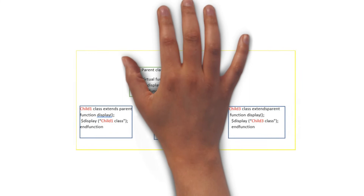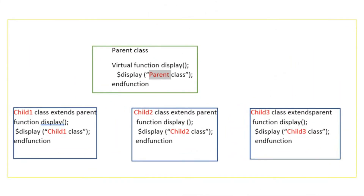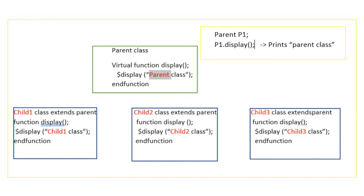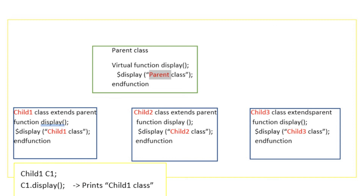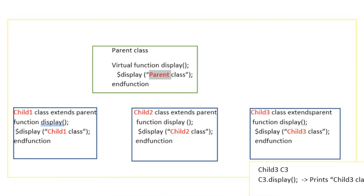Let's look at the example. In this diagram we have a parent class and three child classes. The parent class has a function called display which displays 'parent class'. All child classes also have the function display — it's the same function name but it displays different things: child one displays 'child one class', child two displays 'child two class', child three displays 'child three class'. To use the display function from the parent class we use the parent's handle. To use child one's display we use child one's handle, child two's handle for child two, and child three's handle for child three. We use different handles for each class to access their respective functions and variables.